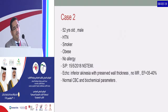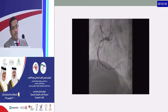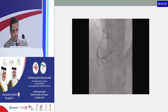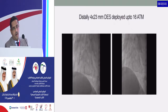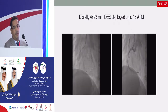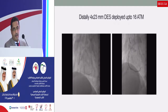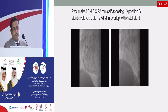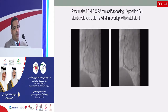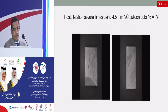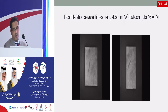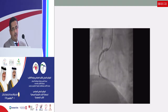For the second case, a 50-year-old male, hypertensive, smoker, obese, post non-STEMI with inferior akinesia. The RCA was ectatic with significant proximal stenosis. We placed a drug-eluting stent distally, 4 by 23 millimeters, up to 6 atmospheres. Then in the proximal segment, we used a self-expanding nitinol drug-eluting stent, overlapping with the distal one, up to 12 atmospheres. We performed post-dilation several times using a 4.5 non-compliant balloon up to 16 atmospheres. This is the final result after PCI.